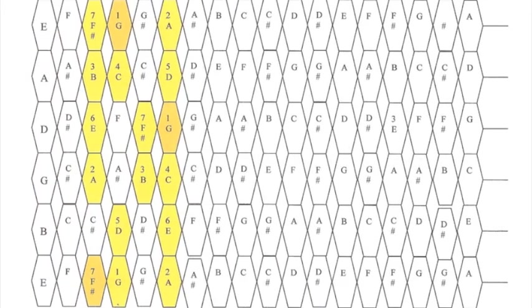Let's watch the foundational patterns change through the cycle of fourths, starting with pattern three in the key of G. Remember to watch the highlighted note move across the strings.